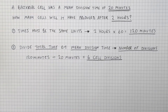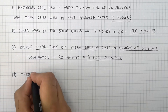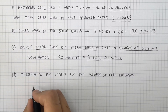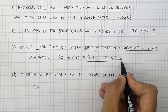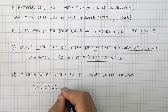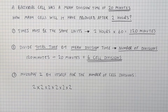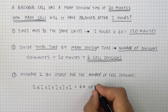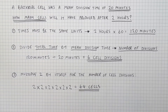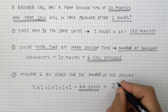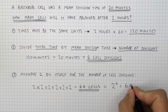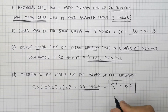So to work out how many cells it will have produced after 2 hours, we'll then multiply 2 by itself for the number of cell divisions. So that will mean you multiply 2 by itself 6 times: 2 times 2 times 2 times 2 times 2 times 2. That will give you an answer of 64 cells. Another way of representing this is 2 to the power of 6, which also gives you 64. So 64 cells were produced after 2 hours.